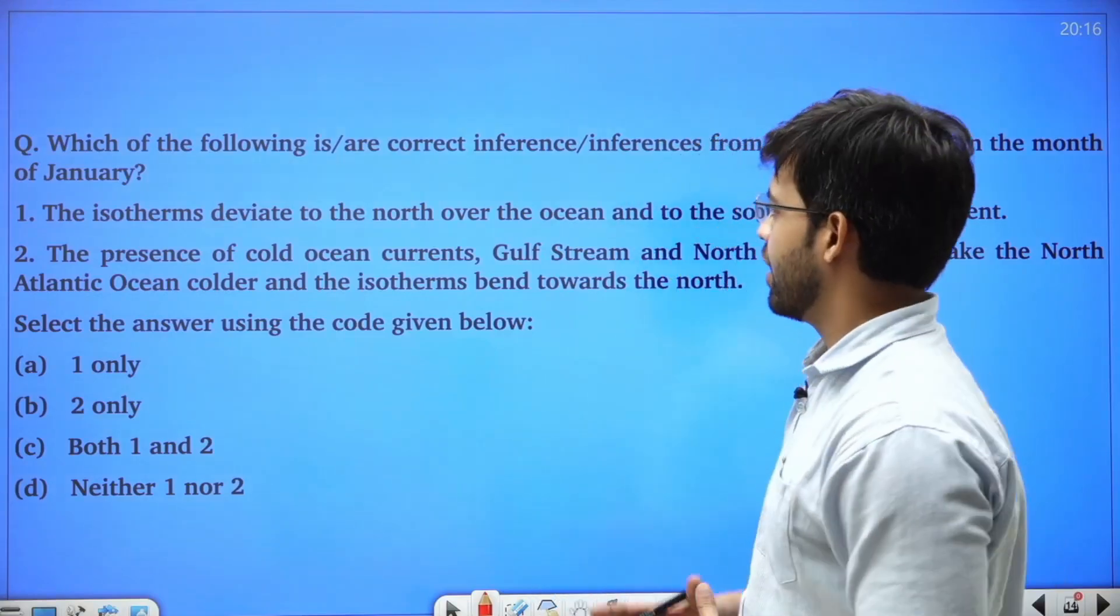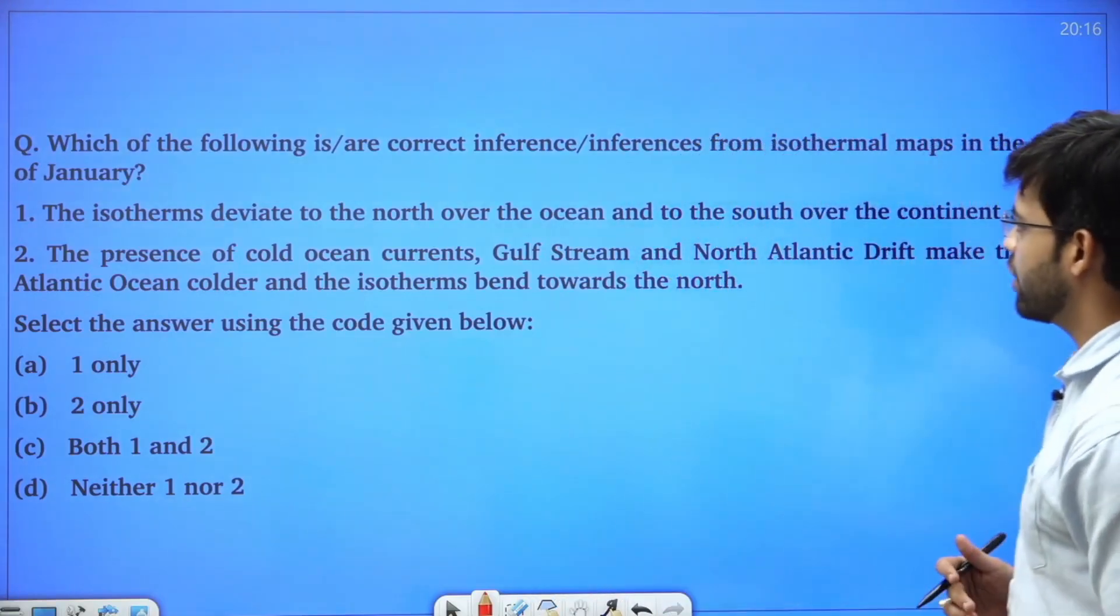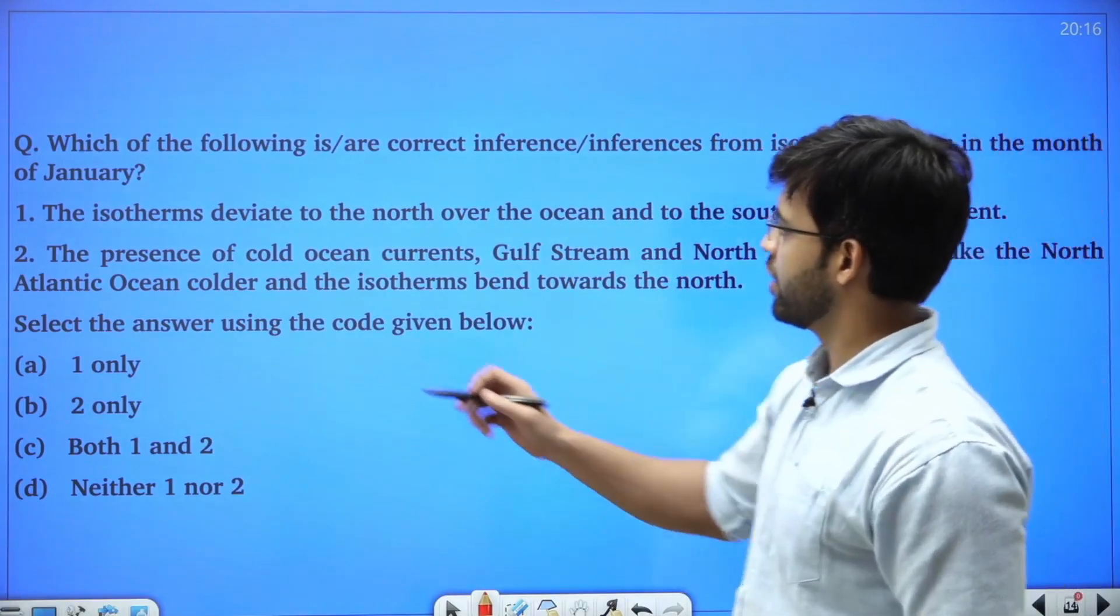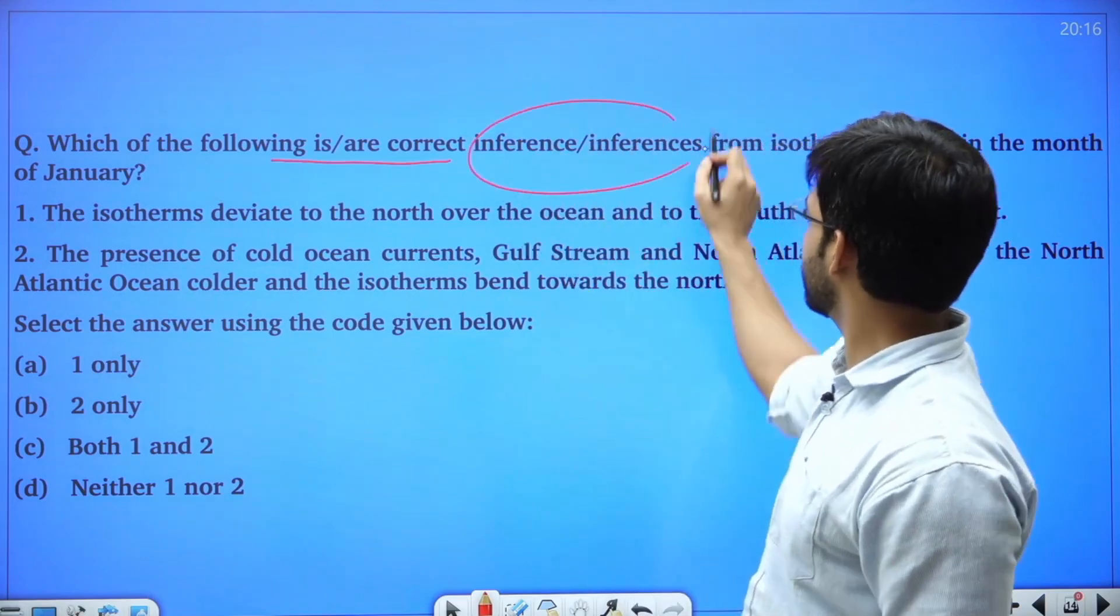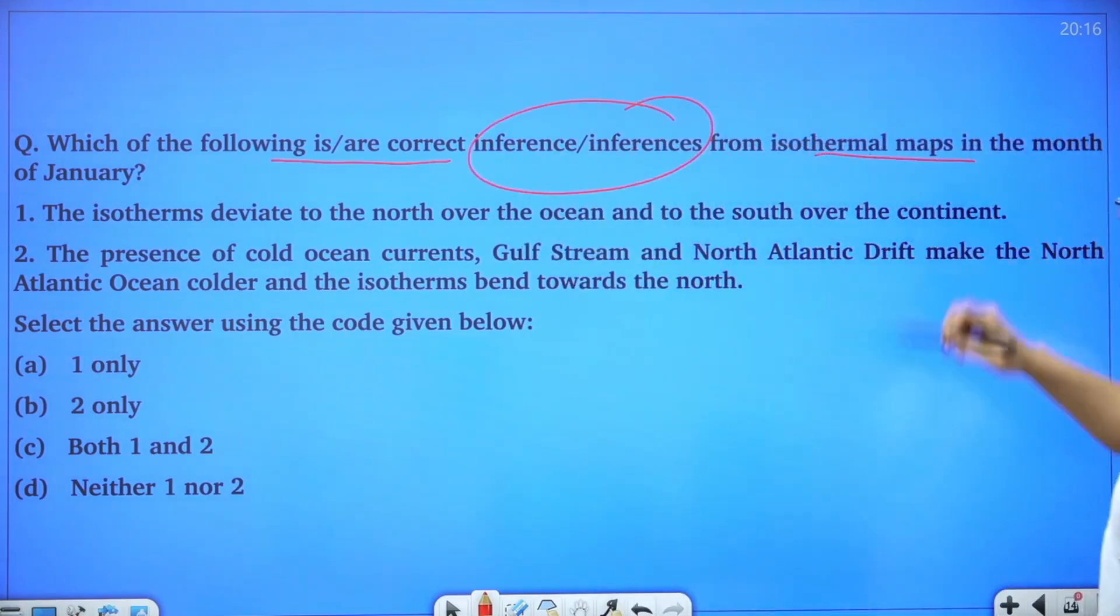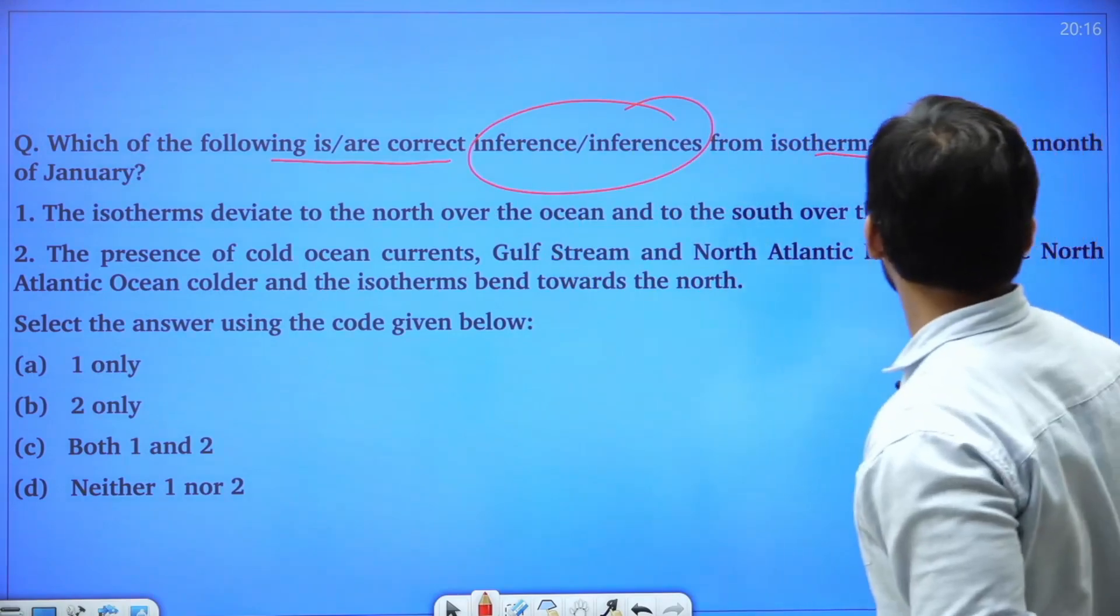Hello and welcome. Let us discuss this question that was there in the 2024 paper. The question is: which of the following is/are correct inference/inferences from isothermal maps in the month of January?